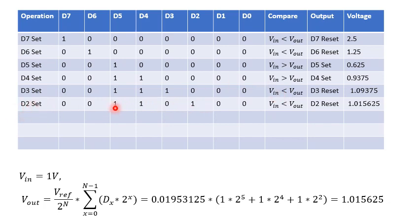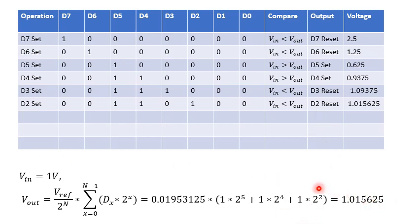D2 is set by the ring counter, but D3 is reset because of the previous comparison. With D5, D4, and D2 set, Vout equals 0.01953 × (2^5 + 2^4 + 2^2), giving approximately 1.015625 volts. Again Vin is less than Vout, so D2 must also be reset.